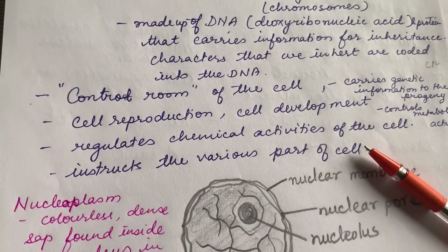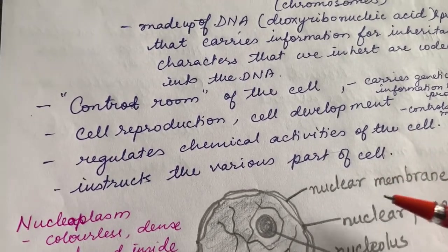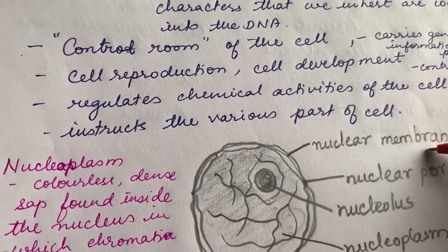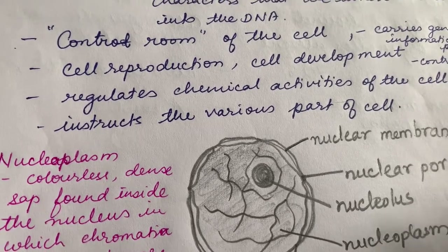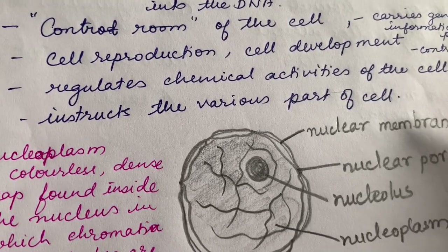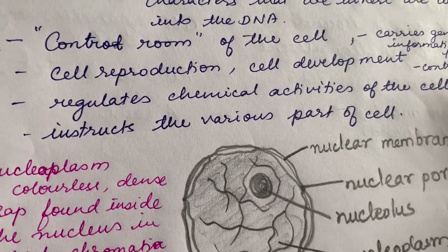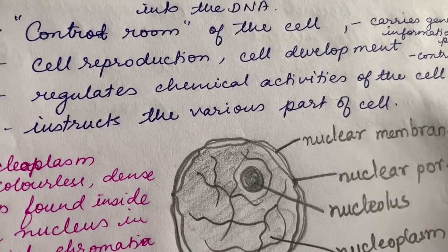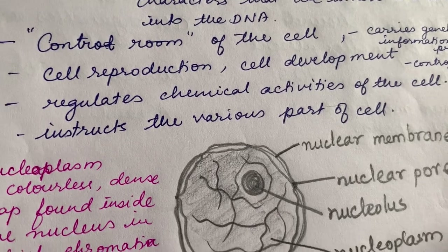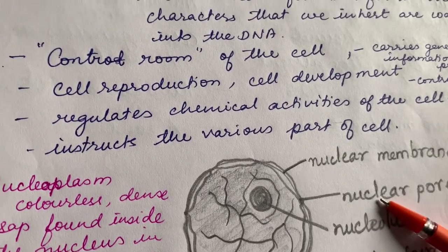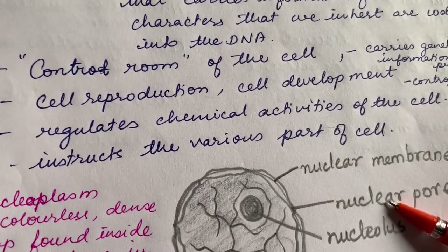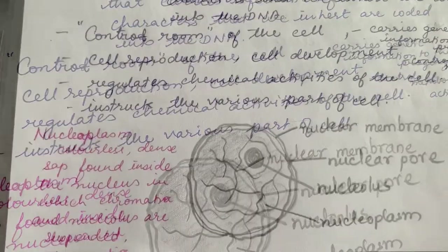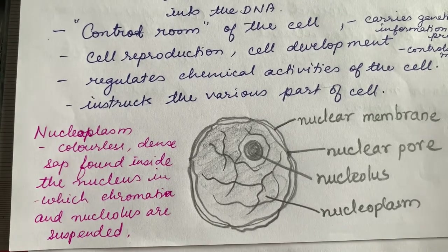For example, if all of a sudden you feel scared, that is because some cells are secreting certain chemicals in your body. If you are very happy and start smiling, the brain cells instruct some cells to produce hormones and chemicals, and as a result you smile. All the activities the body does are controlled by the nucleus of the cell.